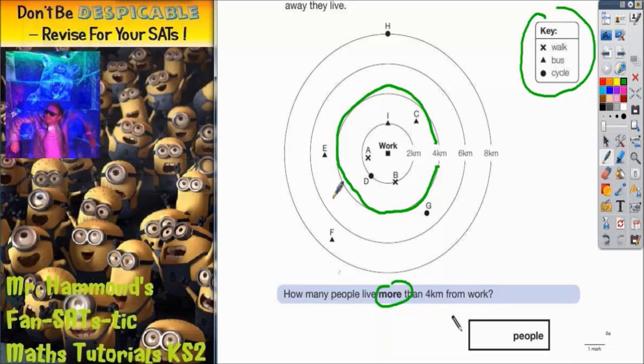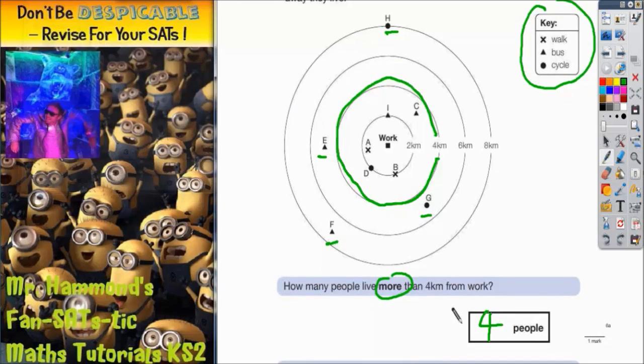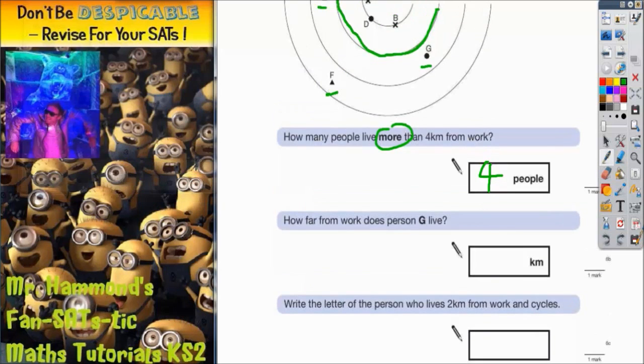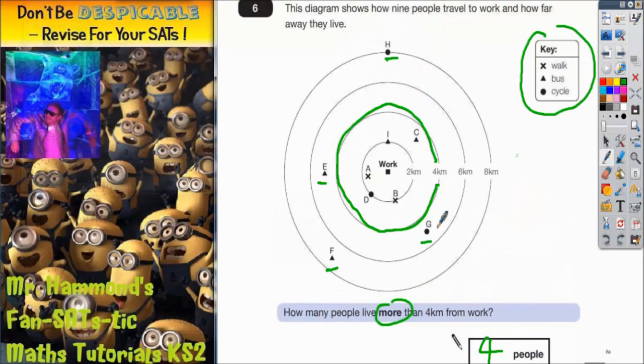OK, so that means we've got E, F, G, and H. That's one, two, three, four people. So that's what we write in there. It then says, how far from work does person G live? Well, person G, if I just grab a different color, if you follow it round to the numbers, is halfway between 4 kilometers and 6 kilometers.